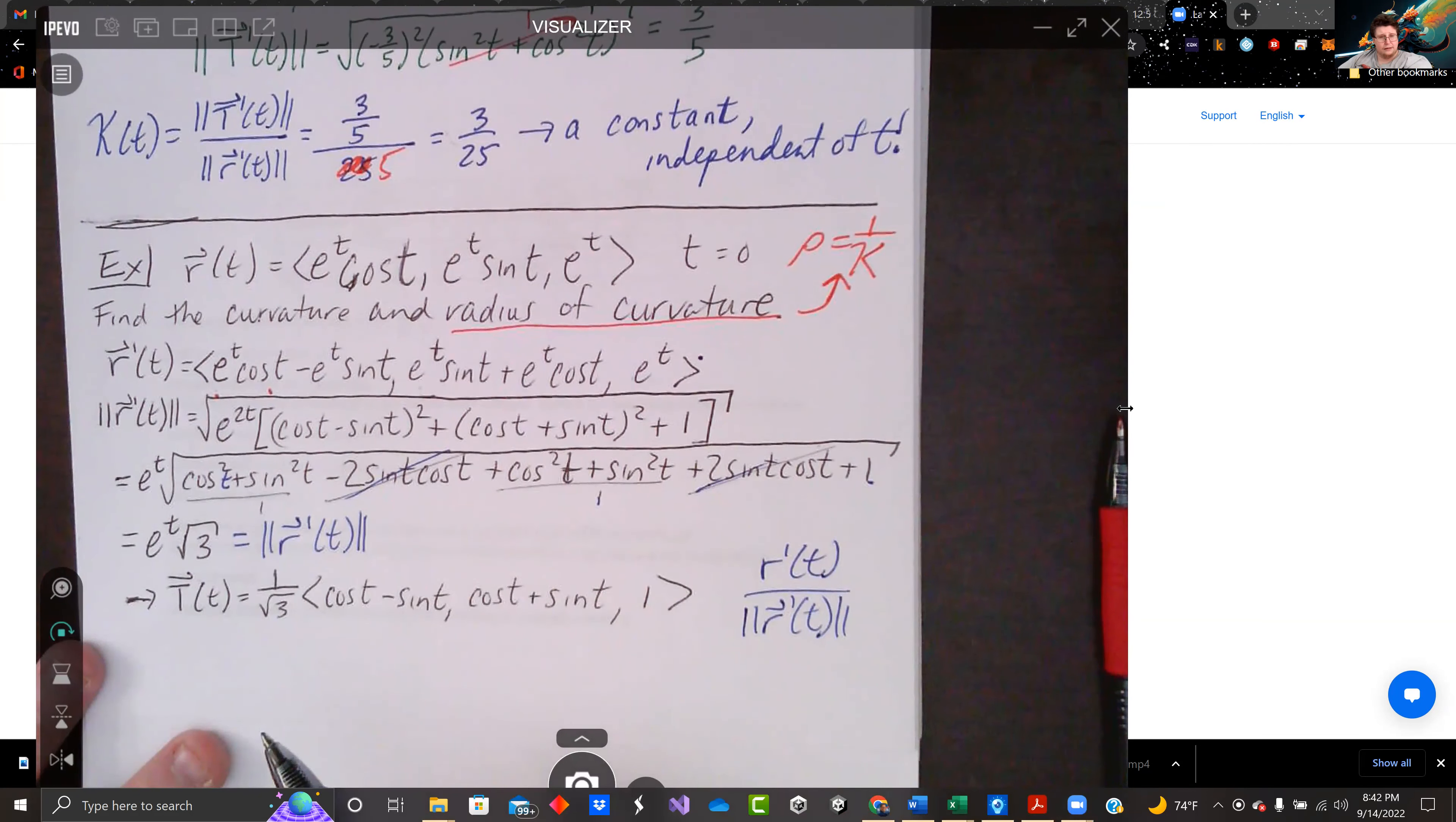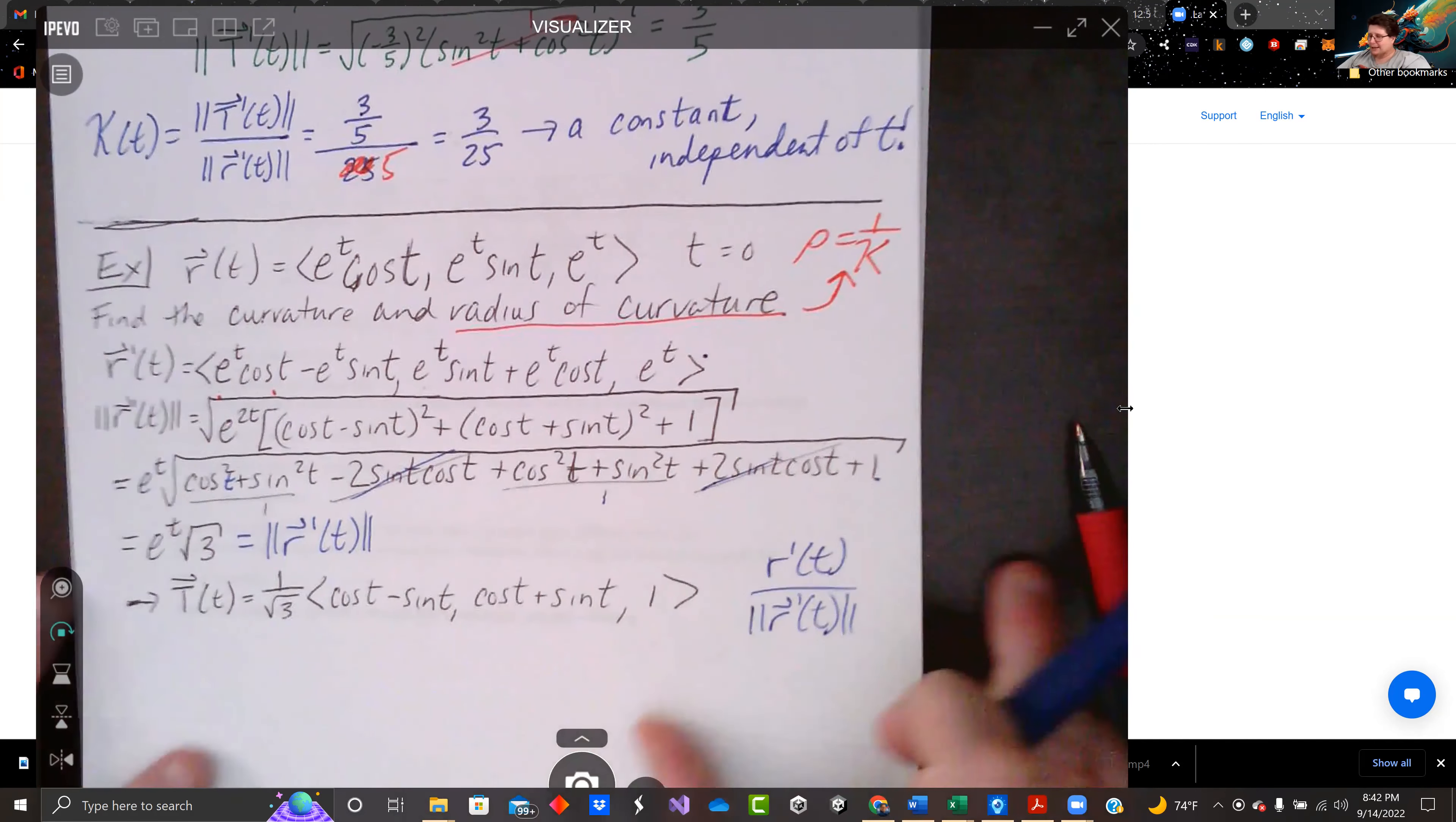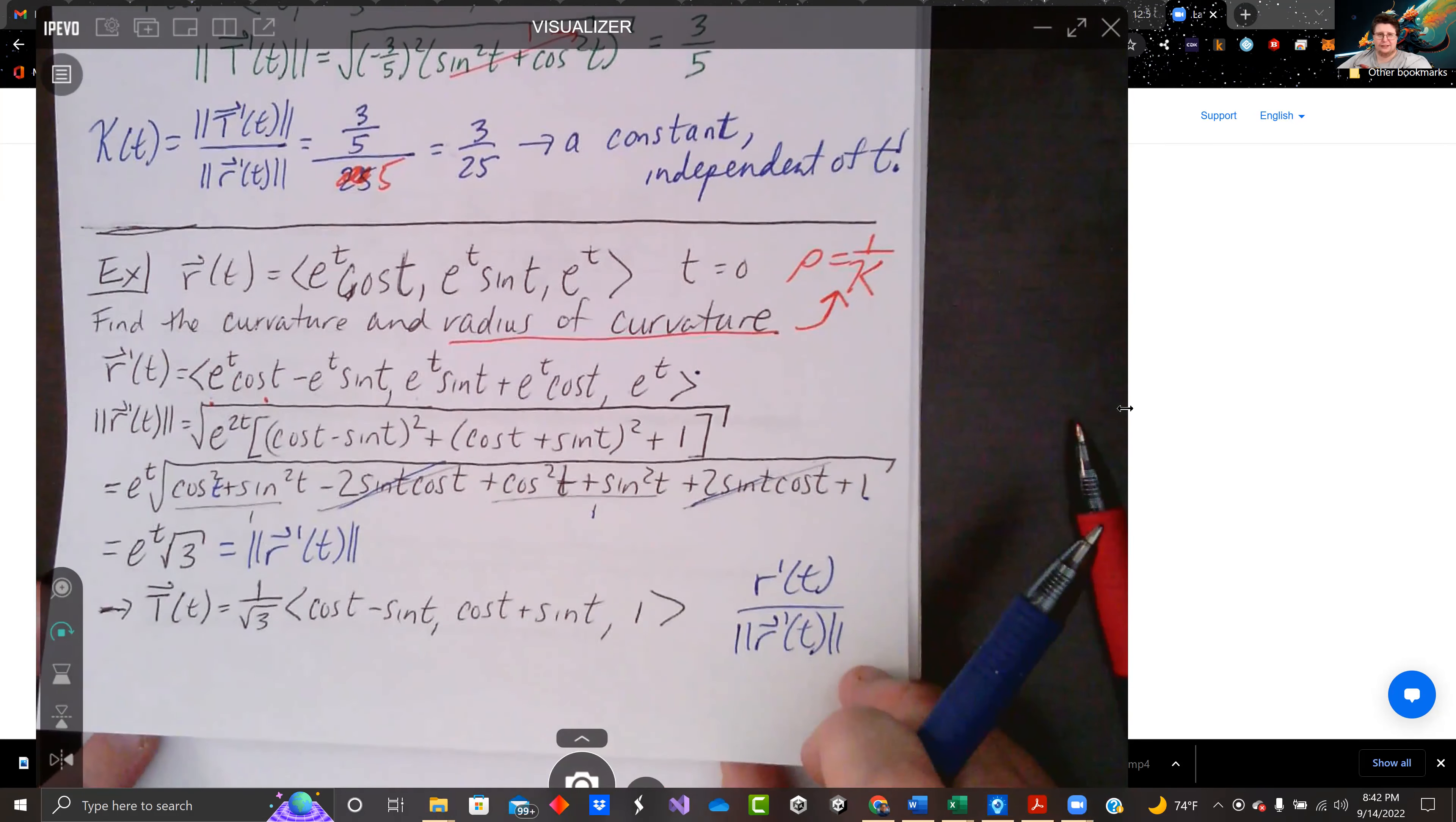It was dividing by it. So the root three goes on the denominator. The e to t in the denominator cancels out those e to the t's. Our vector is just one over root three. And then cosine t minus sine t, cosine t plus sine t, and then one. That's the tangent vector.